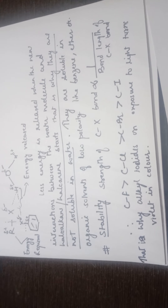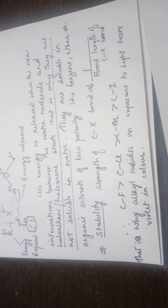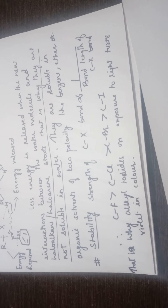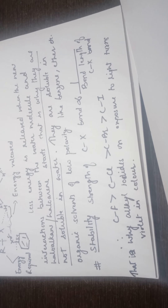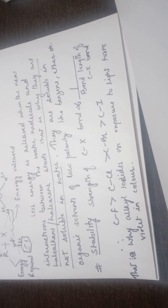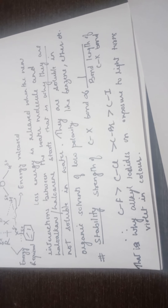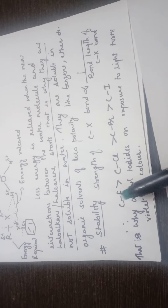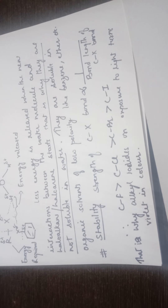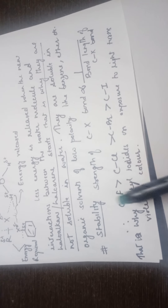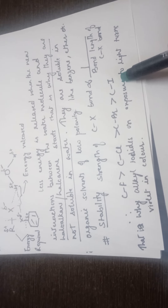Now coming to the stability or strength of the C-X bond. If the size of the halogen X is large, the C-X bond length will be more and the bond will be easy to break. If the halogen is small like fluorine, the C-X bond length will be small and difficult to break. Therefore, comparing in terms of size and bond cleavage energy, the C-F bond is the most stable because fluorine is small, the bond length is short, and more energy is required to cleave it — making it more stable than C-Cl, C-Br, and C-I.